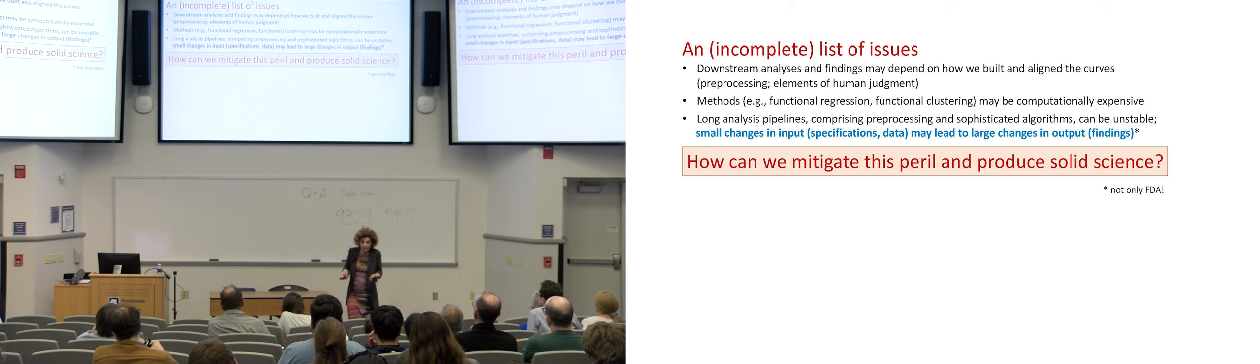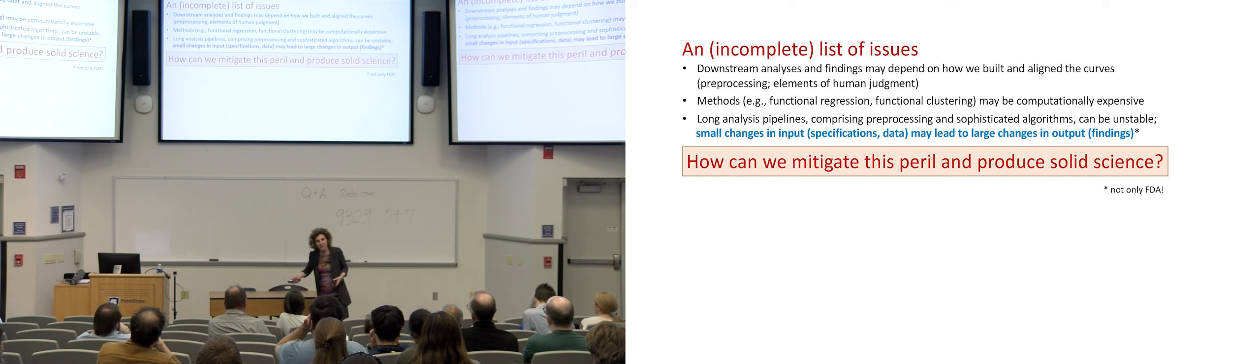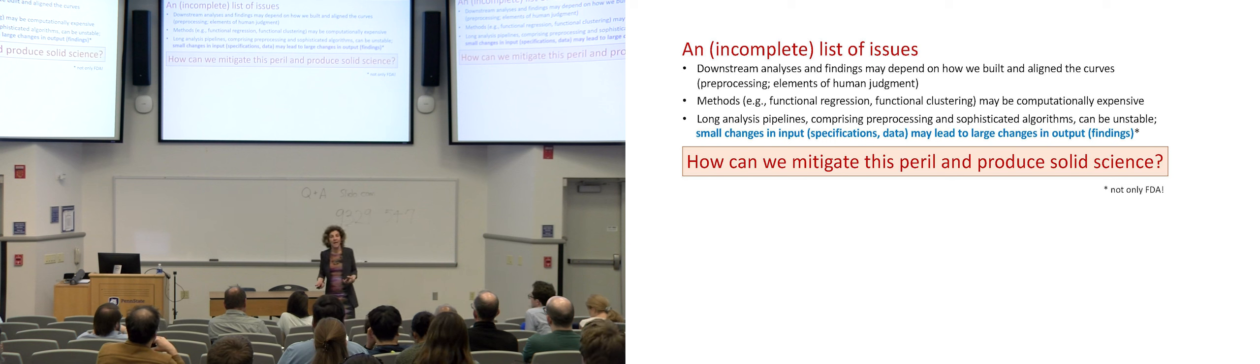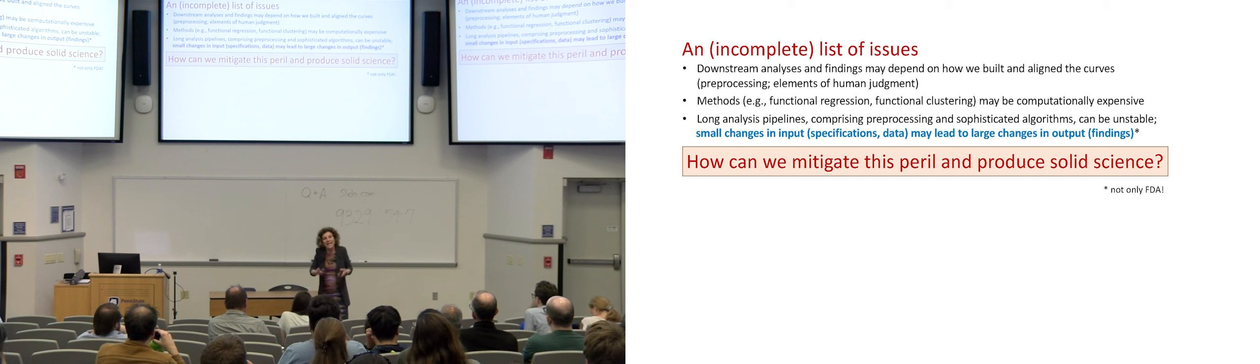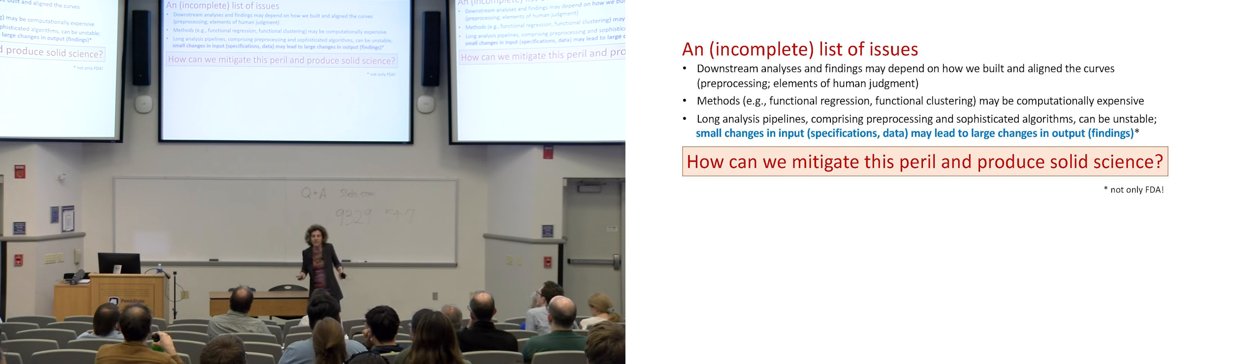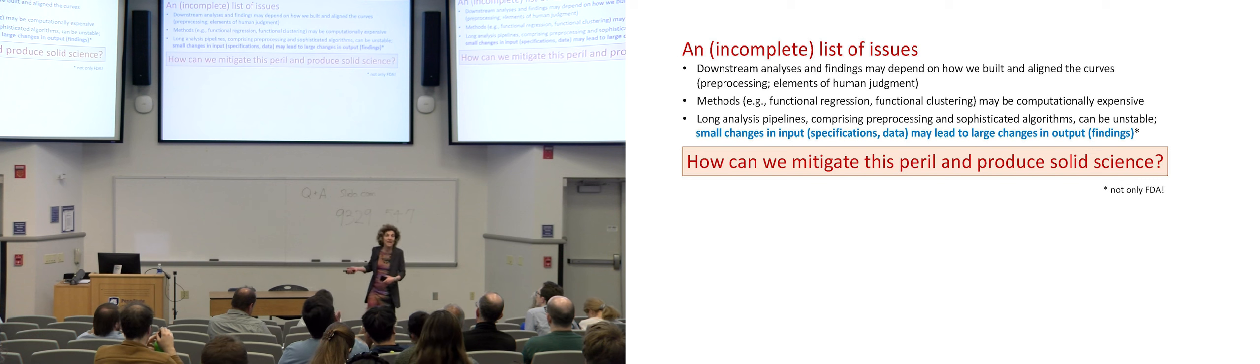Another issue that can have a role is that some of the methods can become computationally taxing. Can have a substantial computational burden. But by and large, the thing that I want to stress here is that when you build this very long, very complex, very articulated analysis pipelines that have delicate pre-processing stages where you have some elements of arbitrariness, followed by very sophisticated algorithms afterwards, building this stuff up, you inevitably build in an instability. And this is hardly just a problem of functional data analysis. In a way, you can say that the more sophisticated and powerful is a methodology, the higher is the risk that it has instability built in. Instability comes with power, in a way. So, how can we mitigate this type of peril and produce solid science?